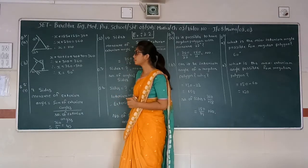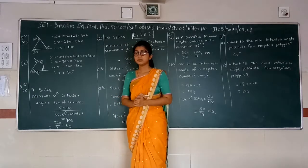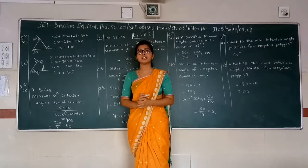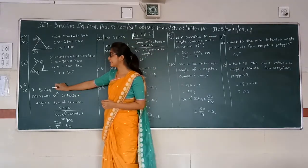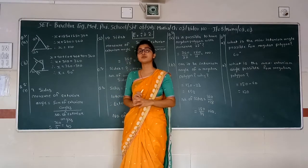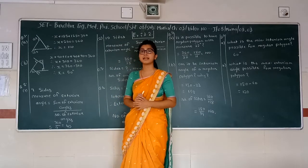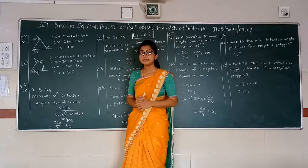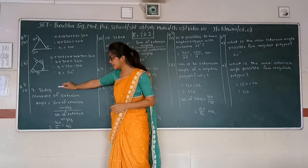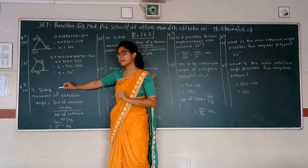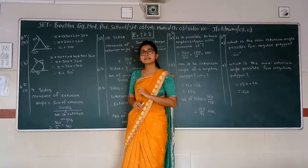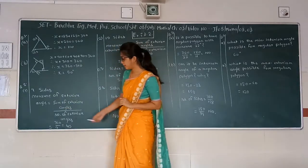Now Question number 2, first part. We have to find the measure of an exterior angle of a regular polygon with 9 sides. As we all know, the sum of all exterior angles will be 360. So if we divide 360 by 9, we will get the measure of a single exterior angle, which is 40.